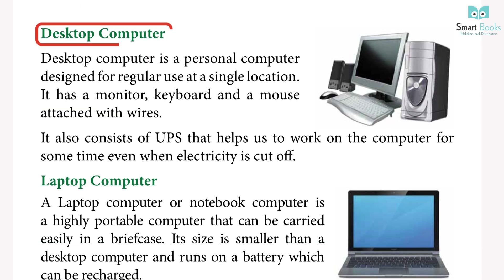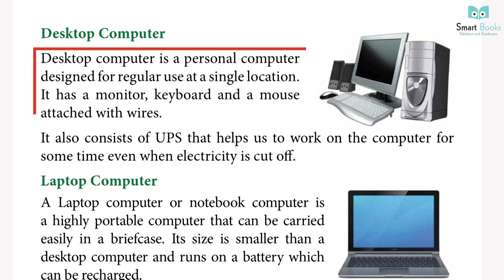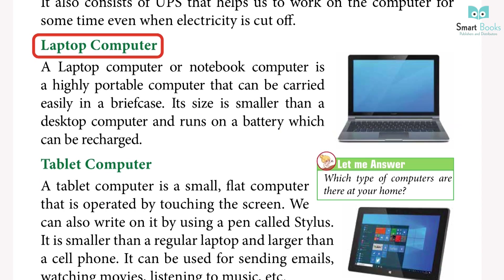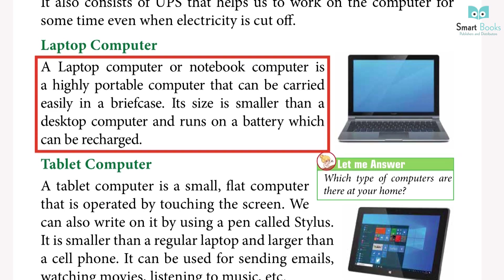Desktop computer: a desktop computer is a personal computer designed for regular use at a single location. It has a monitor, keyboard, and a mouse attached with wires. It also consists of a UPS that helps us to work on the computer for some time even when electricity is cut off.